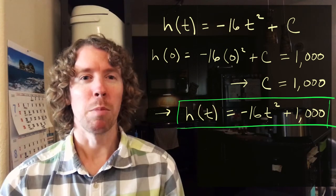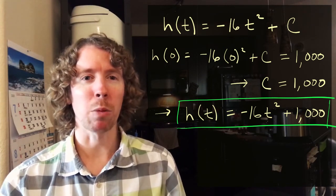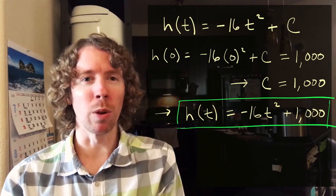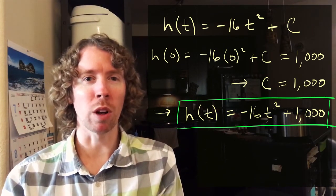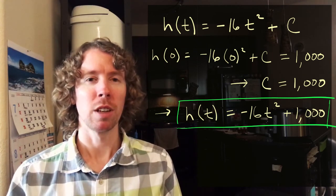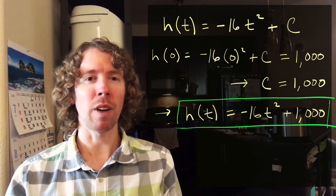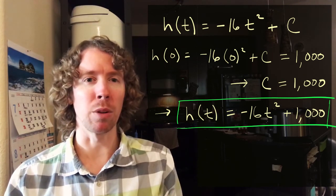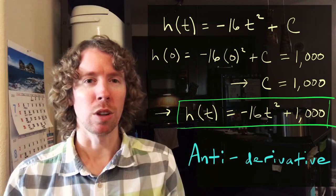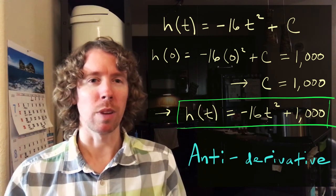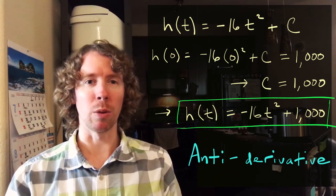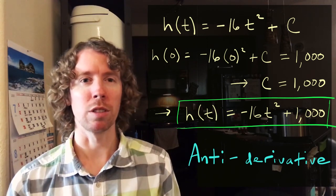By the way, this process of going backwards — where you already know the derivative and you want to go back and find the original function — is called finding an antiderivative. Antiderivatives are always about going backwards and finding the original function.